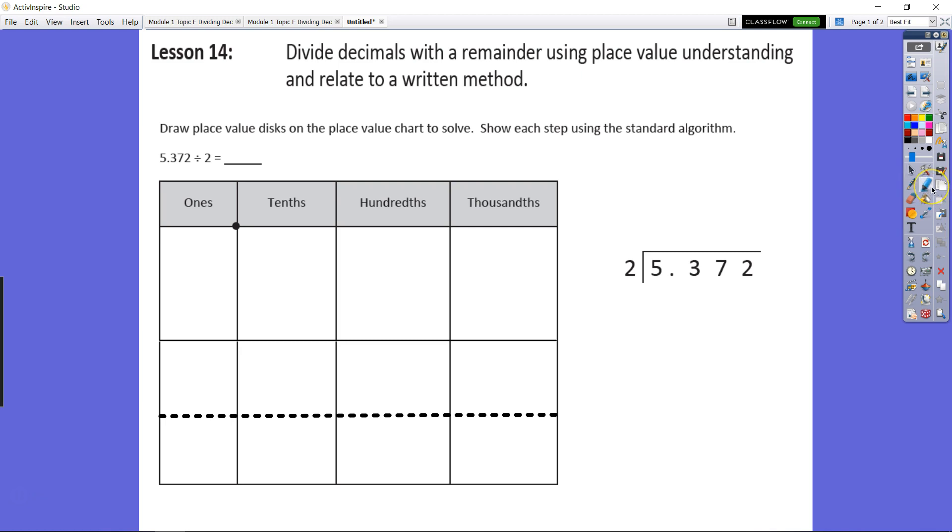Let's add in our disks. We have five ones, three tenths, seven hundredths, and two thousandths. If we divide five into two groups, we have two in each group and one remaining. Since we can't evenly divide this whole by two, we need to regroup it as tenths.